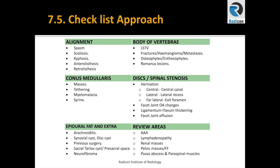Also under D: facet joint effusions. E is for epidural fat or extras: arachnoiditis, synovial cysts, previous surgeries, sacral Tarlov cysts, pre-sacral space issues, neurofibromas, and review areas including AAA or abdominal aortic aneurysm, lymphadenopathy, renal masses, pelvic masses, free fluid, psoas abscesses, or paraspinal muscle issues including abscess or collections.